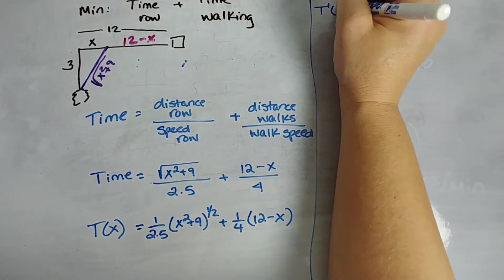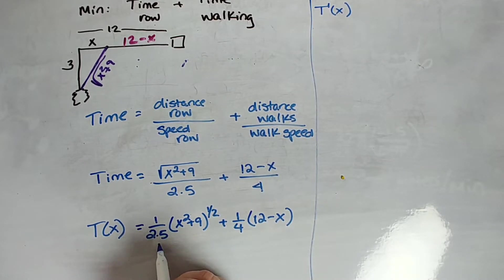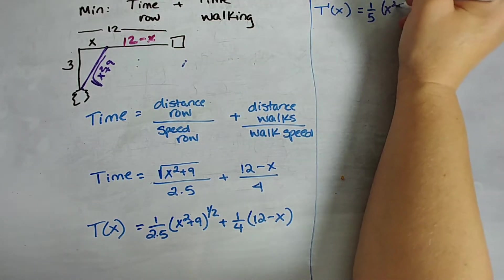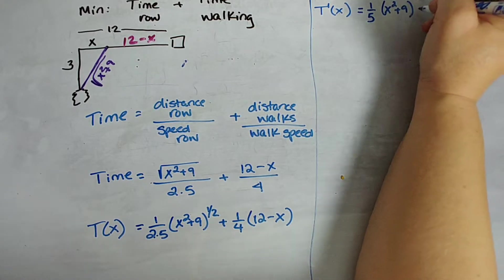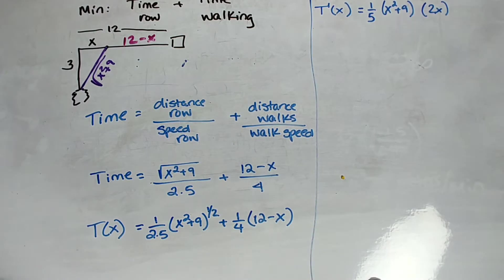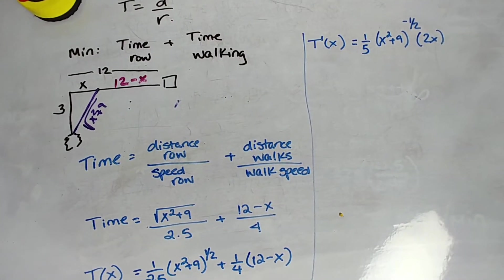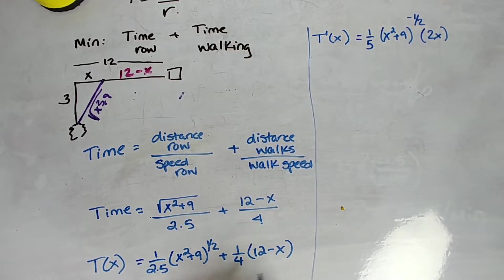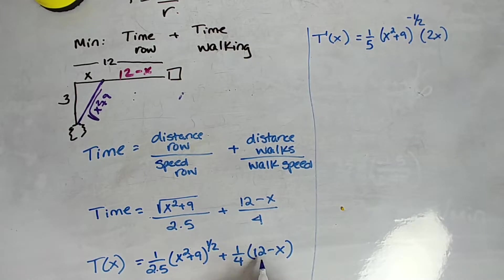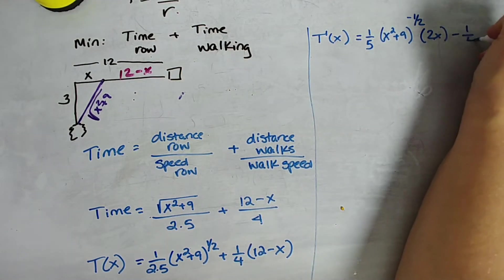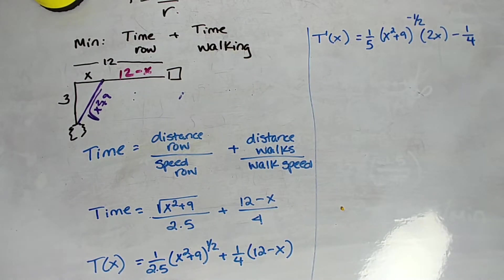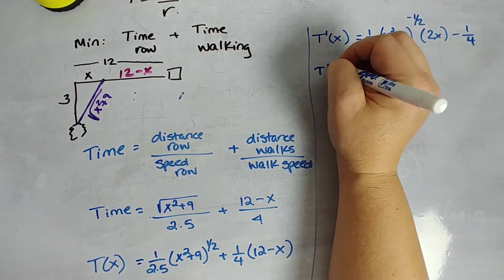Okay, so we're going to go ahead and derive T of X now. So T prime of X, we're going to say 1 half times 1 over 2.5, which is 2 times 2.5, so that's 1 fifth. Okay, so that's not too bad. So we got 1 fifth, right? And we're going to have X squared plus 9. X squared plus 9. Remember, we're going to chain rule. So to the negative 1 half power, and then we take the derivative of what's inside, so 2X. So far, so good.